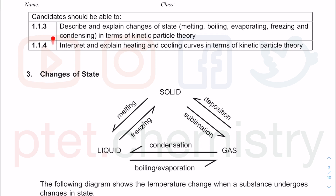For this part of the learning objective, candidates — meaning 14 to 16 year old students — should be able to describe and explain. These are details, so you need a bit of detail, and this is in terms of kinetic particle theory. In the last lecture tutorial, I mentioned kinetic particle theory, which means you must talk about what happens to the particles when asked to explain changes of state — changing between solid, liquid, and gas or backwards. You must talk about what happens to the particles.